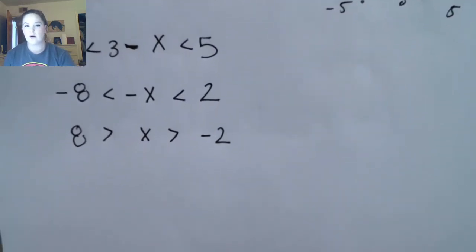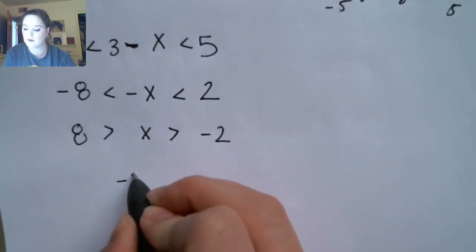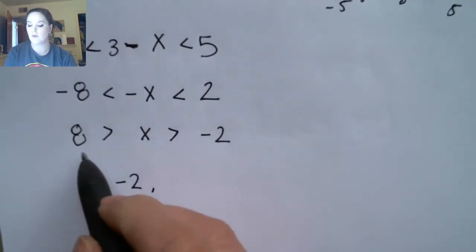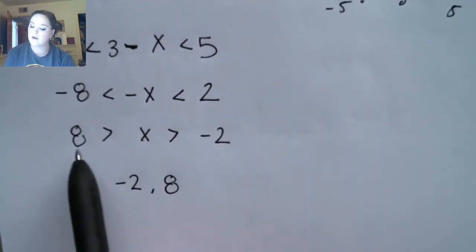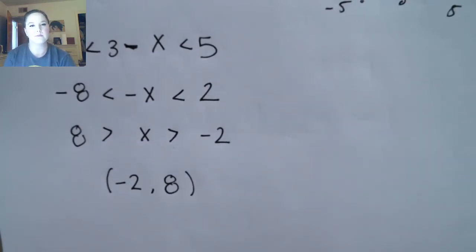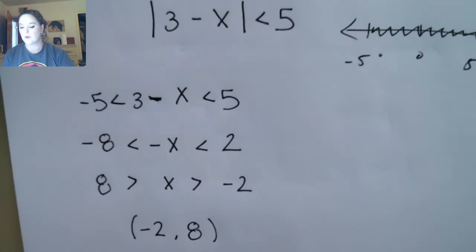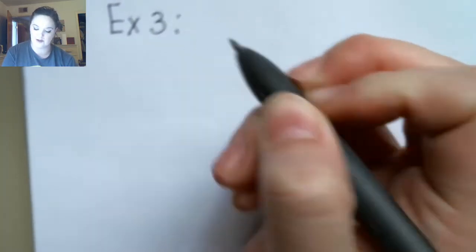For interval notation, remember the left endpoint has to be the smaller number, so that'll be negative two, and our right endpoint is the larger number, positive eight. Because we don't have or equal to, we're not going to include the endpoints — we're going to use parentheses. That's a quick review of how to set those problems up. Let's do one more review-type example.